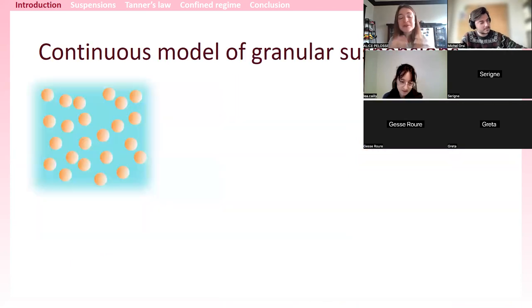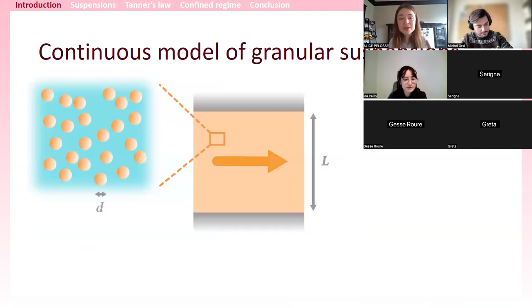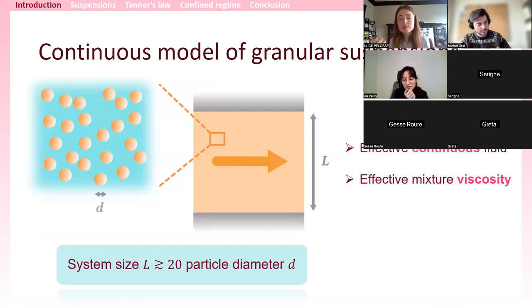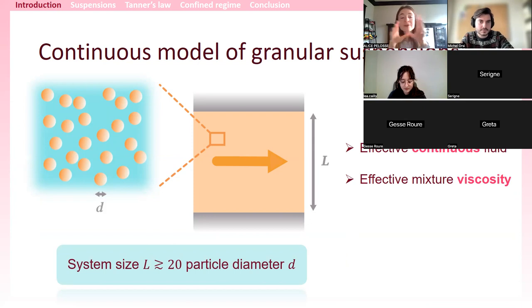Granular suspensions are very complex because there are many objects, and you don't want to account for all the motion of the different particles when you study their flow. This is why we like to use what we name a continuous fluid approach, applicable when the system size is much larger than about 20 particle diameters. In that case, you can forget about microscopic details and treat the suspension as a continuous effective fluid, tuning its properties to still describe the flow of the whole system.